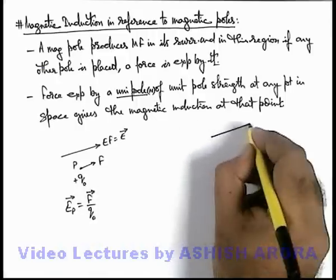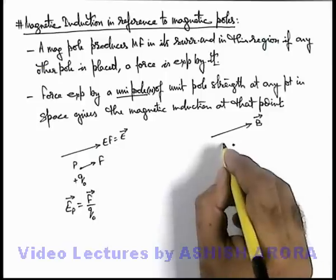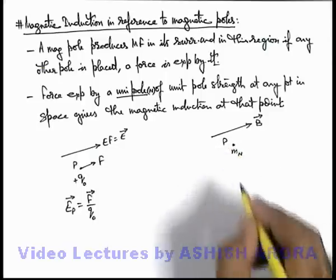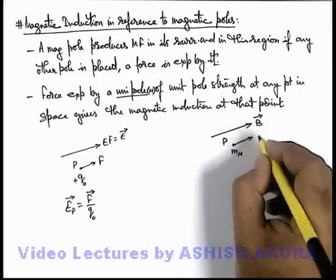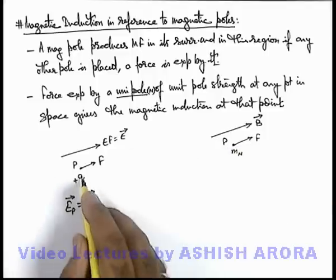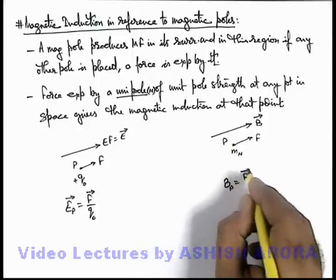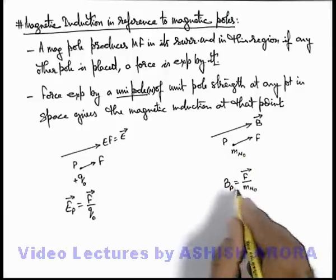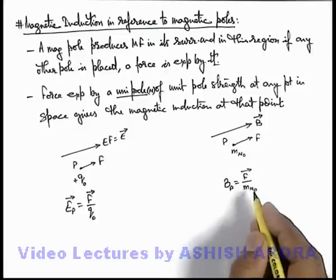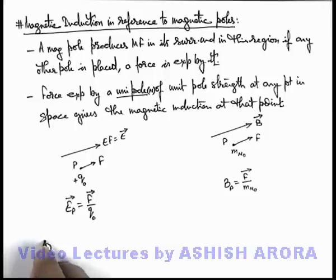For precise and accurate analysis we consider a test charge. Similarly, if in a region a magnetic induction exists given as B vector, and at point P we place a magnetic north pole having pole strength m, then the north pole experiences a force in the direction of magnetic induction, just like a positive charge experiences force in electric field. The magnetic induction at point P is given as force per unit magnetic pole, m-naught, which is the notation for a test magnetic pole.